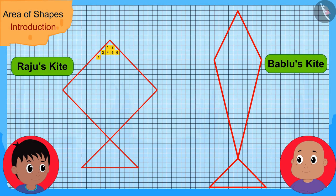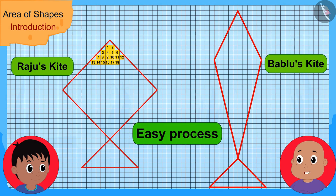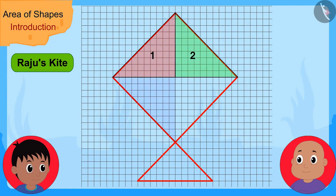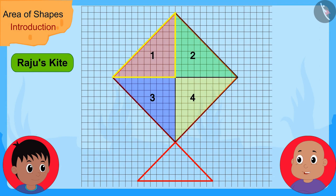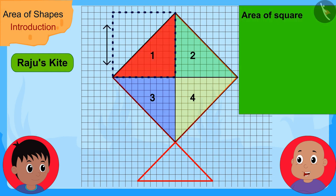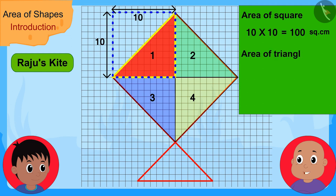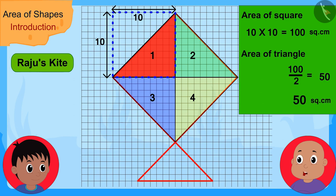Raju immediately began to count the number of squares inside the outlines of the kites. 'Hey Raju, wait. I have an easy process to find the area of shapes. I will show you,' Bablu said. Bablu first made a triangle inside the outline of Raju's kite. 'Look Raju, this triangle inside the outline of your kite is half of this square. The area of this square is 10 times 10 or 100 square centimeters. So the area of this triangle is 100 divided by 2 or 50 square centimeters.'